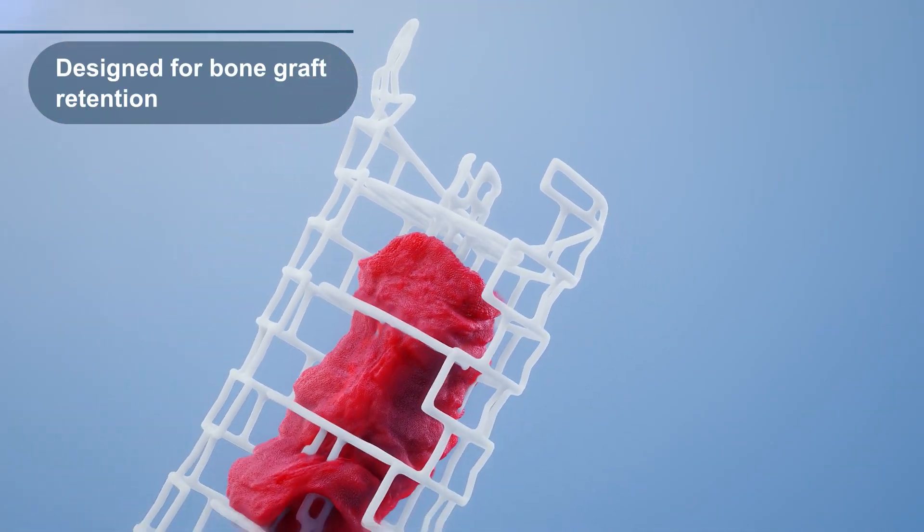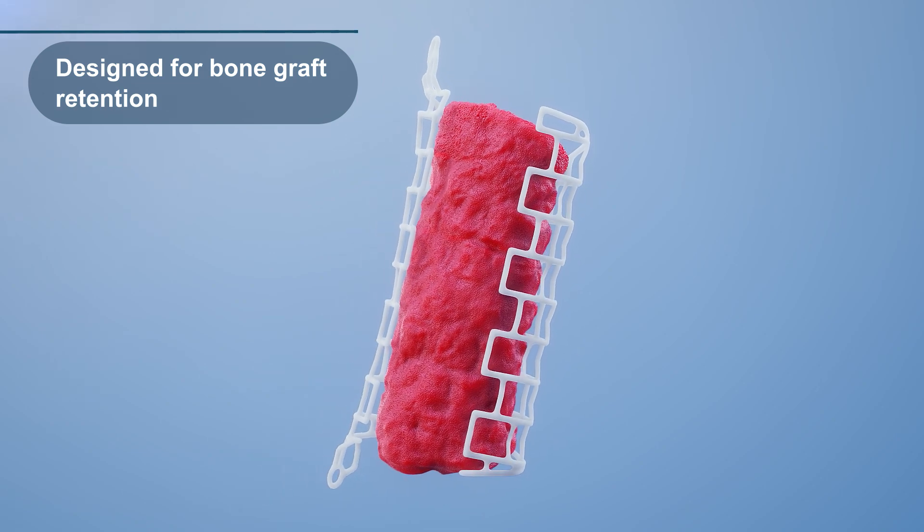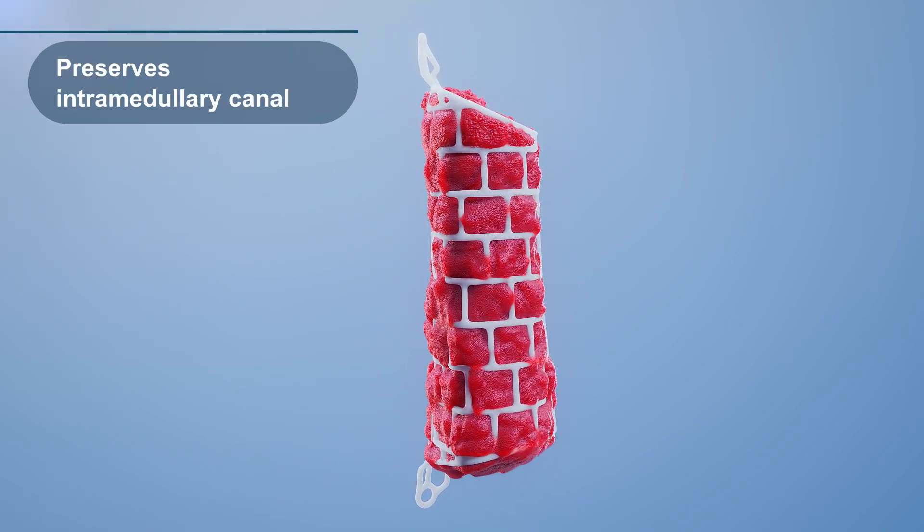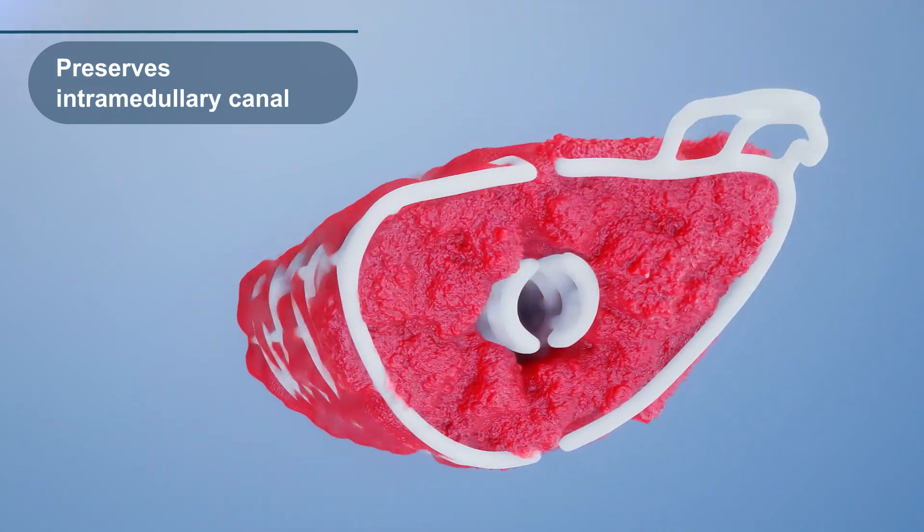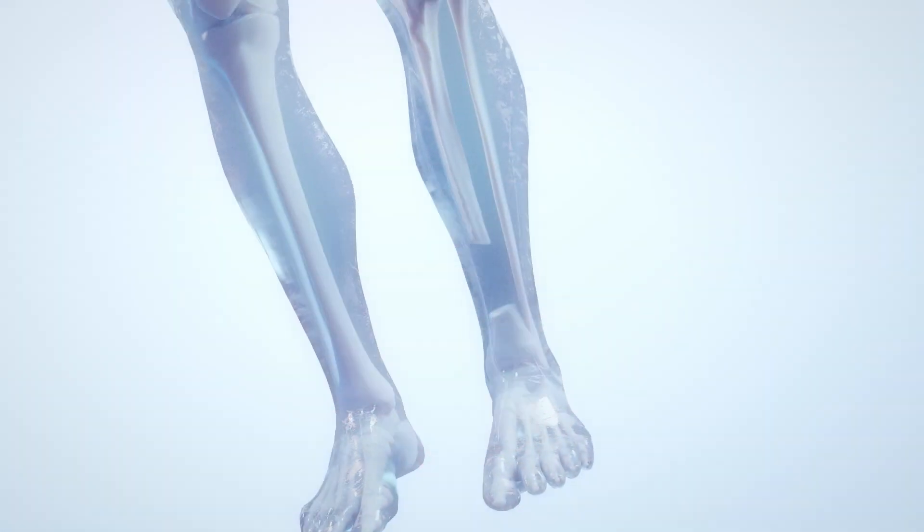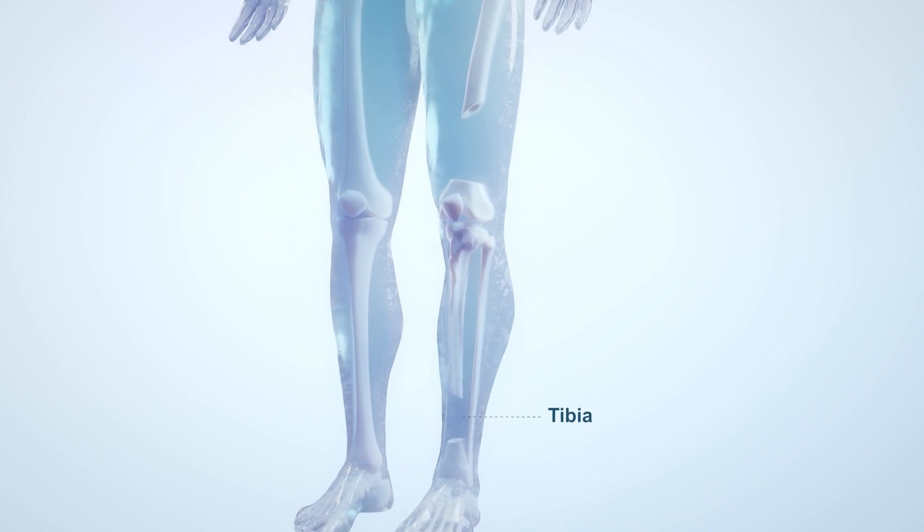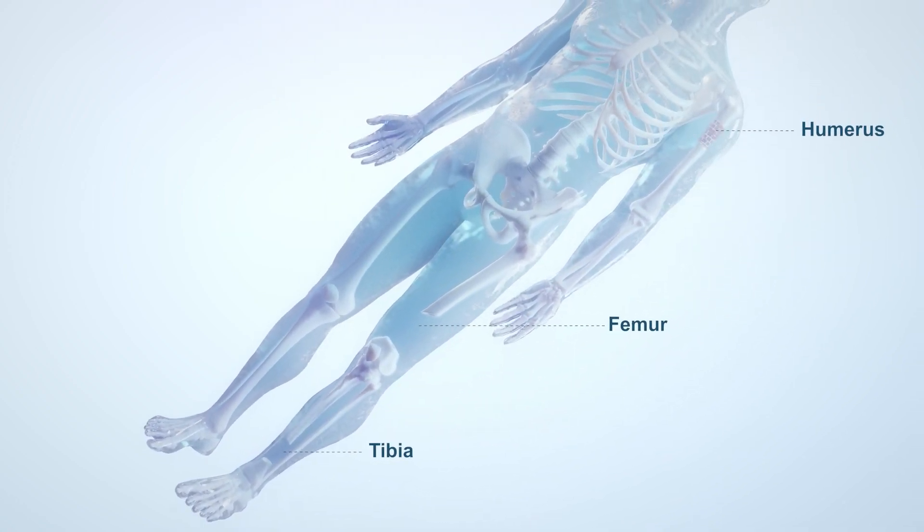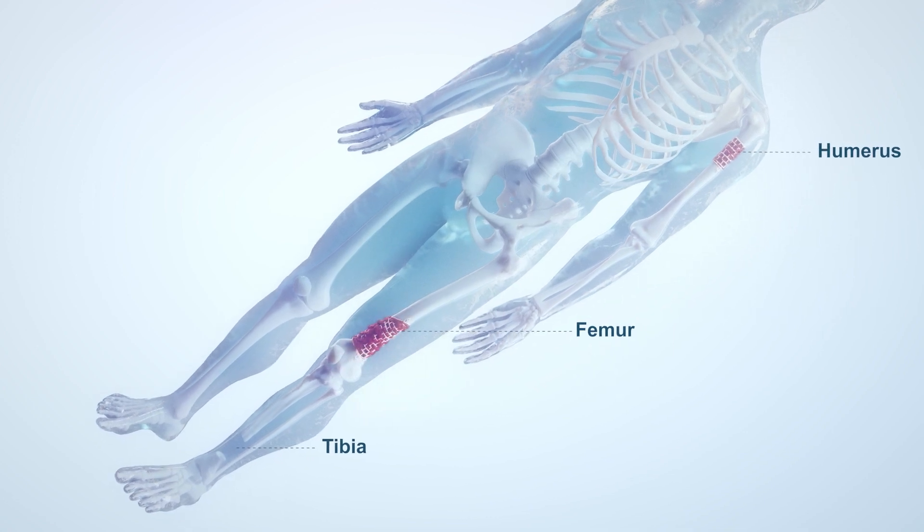The extracted bone graft is incorporated into the cage. The graft cage provides structure to the packed graft. The overall construct mimics previous bone shape. The graft cage maintains the morselized bone graft's position within voids or resections in non-articular regions of the humerus, femur, or tibia.